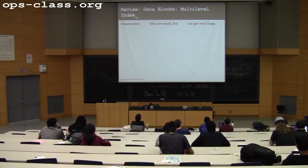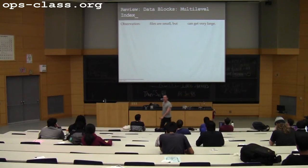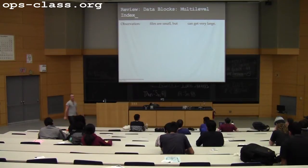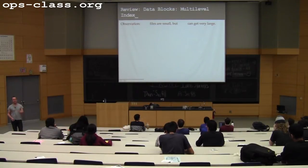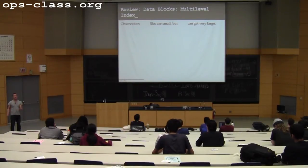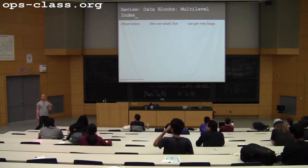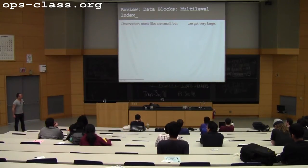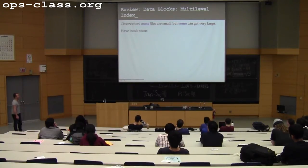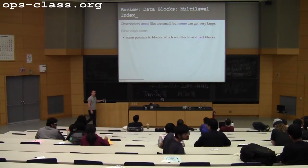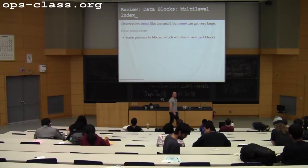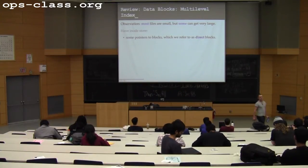Let's talk a little bit about how we organized data blocks. Our final data structure was based on what observation about files? We talked about multi-level indexes, which were based on the distribution of file sizes. Most files are small — small configuration files, lock files that are sometimes zero size, where their very existence is what they're there for. But some files can get really big, and so that drove the multi-level index idea. The inode stores some pointers to blocks, which we call direct blocks, and that stores the first N blocks of the file.